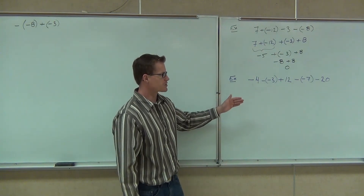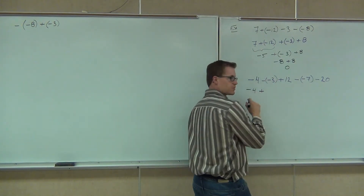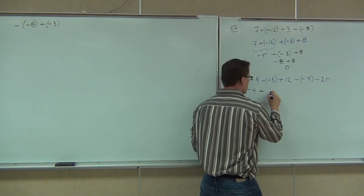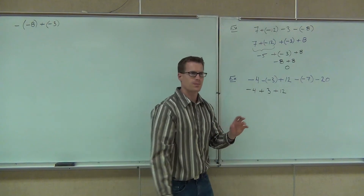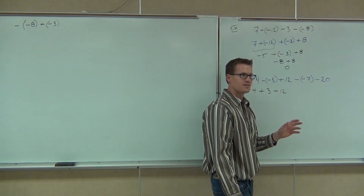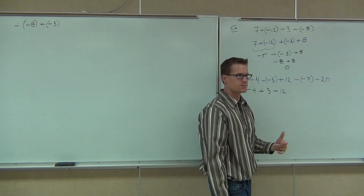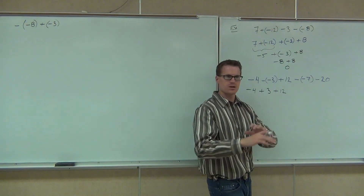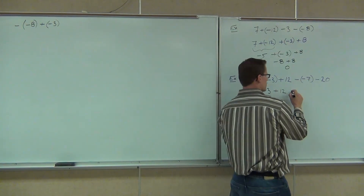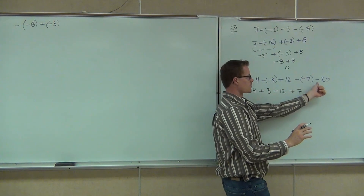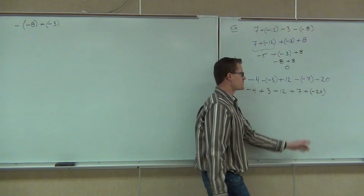Next up, again I'm going to change all the minus signs. The negative 4 will stay the same. The minus negative changes to just a plus — two signs to one sign. Plus 3. Plus 12 — don't change those pluses. Those are nice, that's what we want. Wherever you see a plus, do not change it — ever. Those pluses are what we want. The minus negative 7 changes to plus 7 — two signs to one sign. And minus 20 changes to plus negative 20.